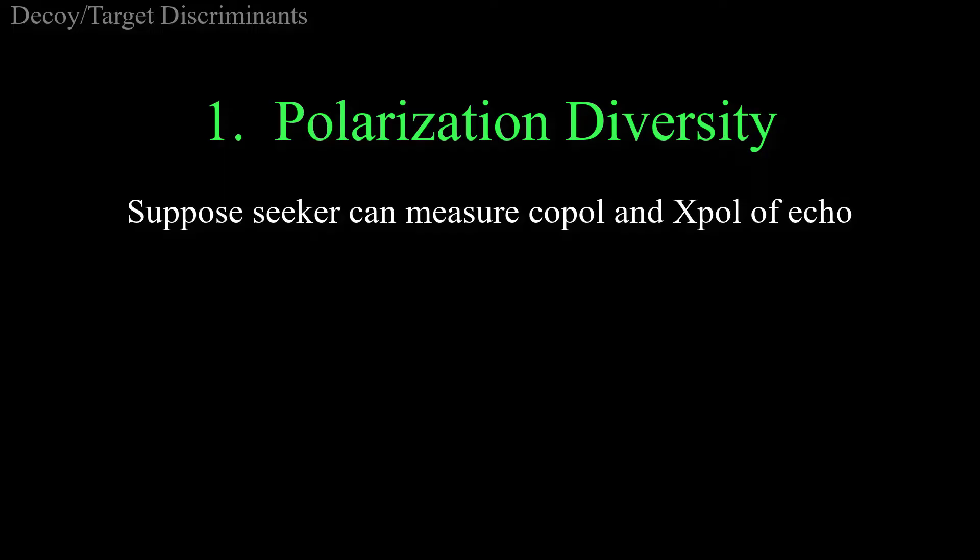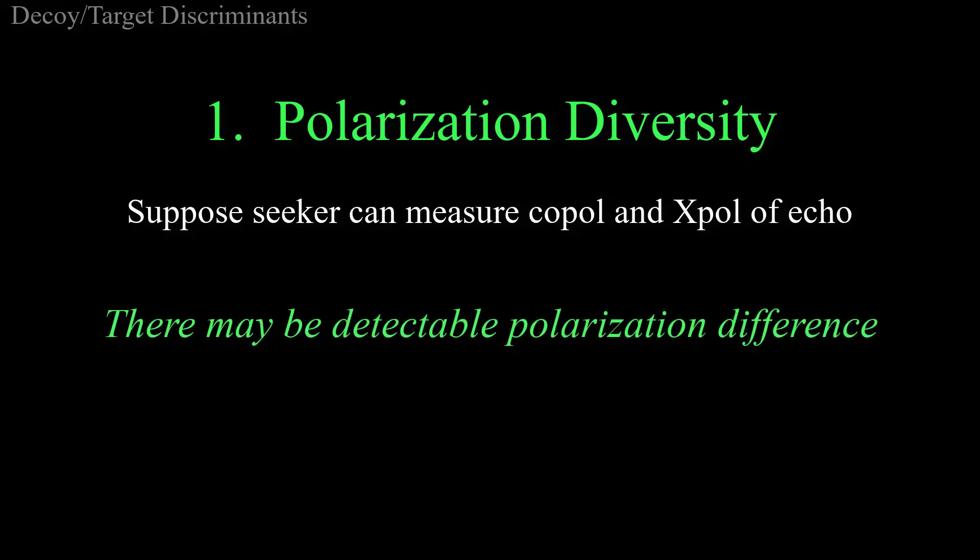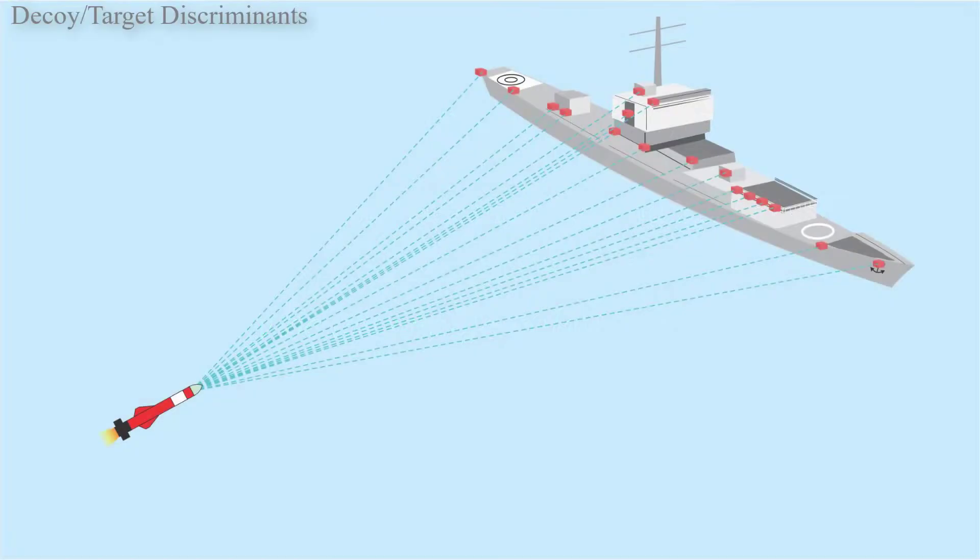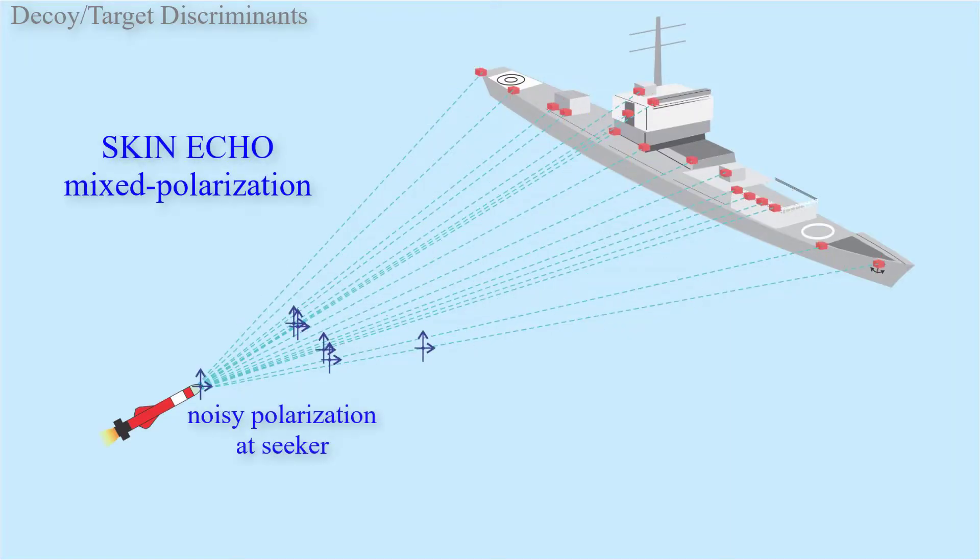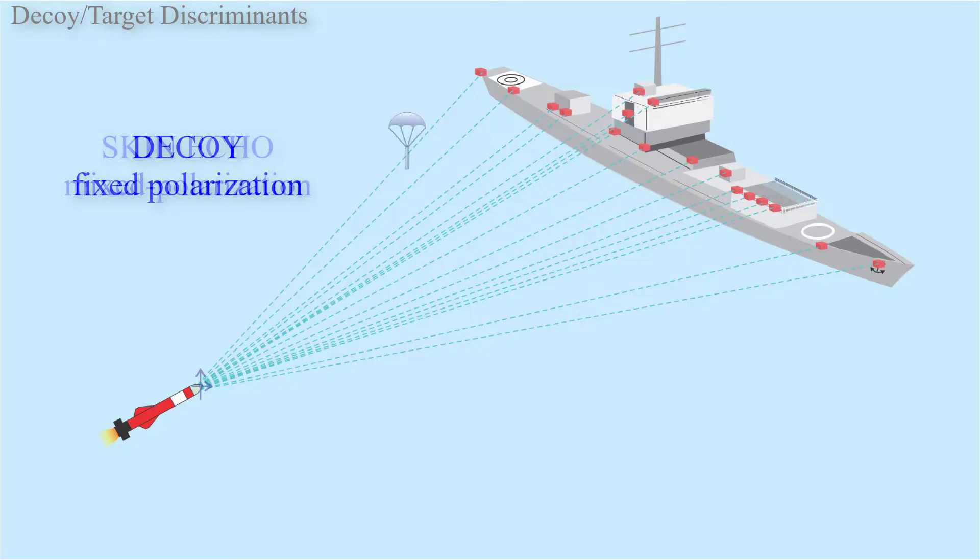Suppose the seeker can measure the copolar and cross-polar components of an echo signal. In that case, the seeker might be able to distinguish between a ship and a decoy. I would expect the echo from a ship to be a noisy mixture of copole and cross-pol, whereas the signal from a decoy would have a steady mixture corresponding to a fixed polarization.